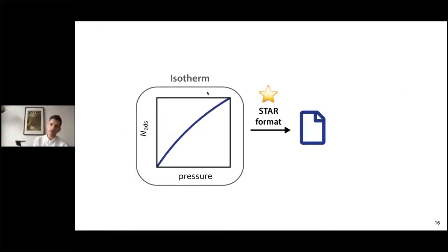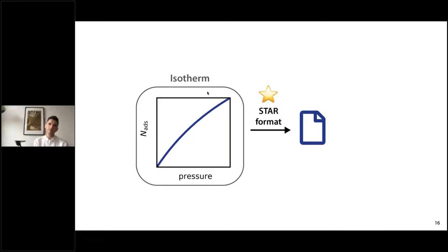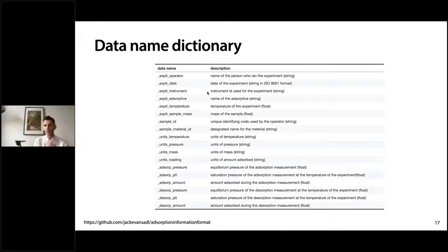This STAR format gives us a good starting point to represent an adsorption experiment — typically something like an isotherm with pressure against amount adsorbed. The problem is that a lot of the CIF data names don't work for adsorption information; they're perfect for describing crystal structures, not adsorption. So we have to define a new dictionary of data names and their descriptions to represent an adsorption experiment. You can find this up-to-date name dictionary on the Adsorption Information Format GitHub associated with this project.